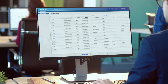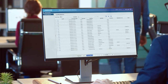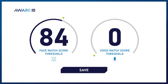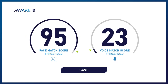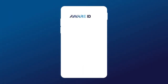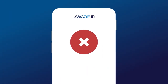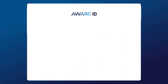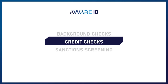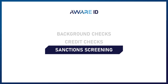On the administration side, AwareID is just as easy to use. In the dashboard, you can easily configure AwareID to use the modalities you want like face or voice or both, and the security threshold required for successful verification. A higher threshold might result in multiple verification attempts, but it's great for situations requiring the highest possible security. Depending on your use case, you can further configure your solution with additional services like background checks, credit checks, and sanctions screening.